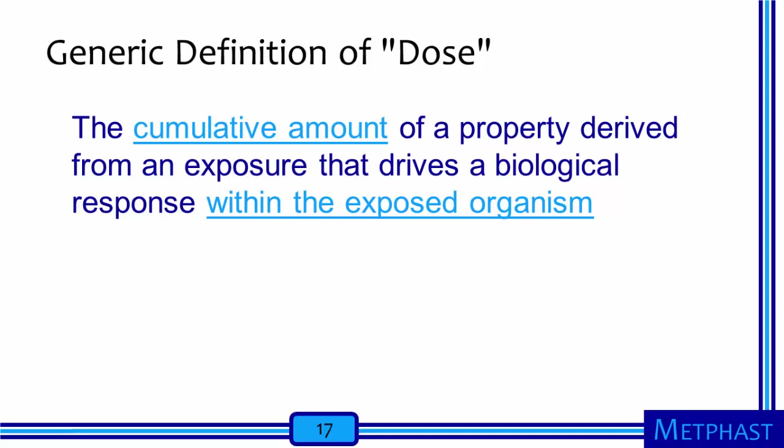A generic definition of dose is the cumulative amount of a property derived from an exposure that drives a biological response within the exposed organism. A dose accrues over time as a worker is repeatedly exposed. While an exposure to an agent is outside the person at the interface with the environment, dose is what gets inside. This is the main difference between exposure and dose.